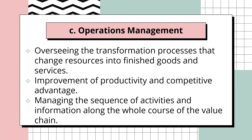The functions under operations management include overseeing the transformation processes that change resources into finished goods and services, improvement of productivity and competitive advantage, and managing the sequence of activities and information along the whole course of the value chain — from raw materials up to the finished goods sold in the market, improving productivity, speed, and customer satisfaction.